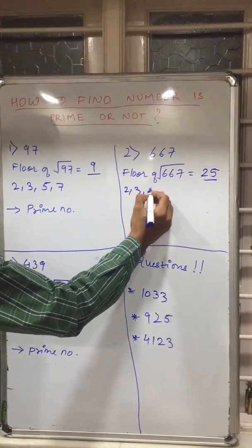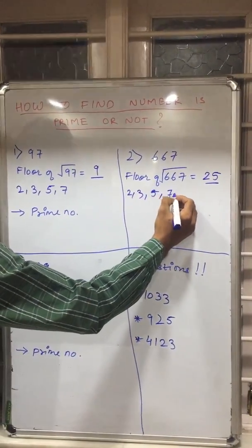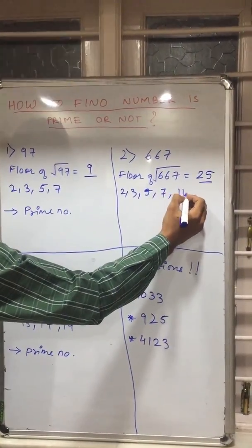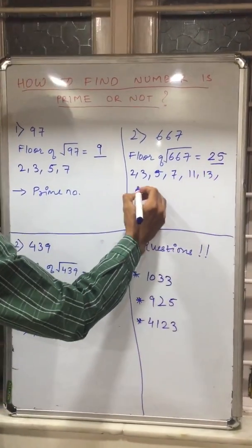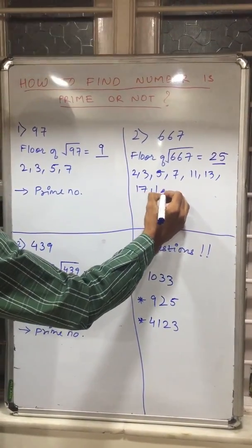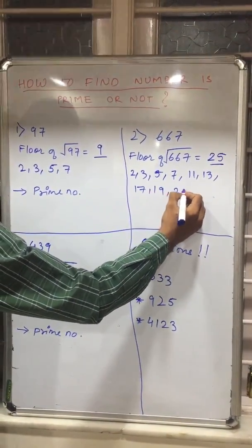It will be 2, 3, 5, 7, 11, 13, 17, 19, and 23.